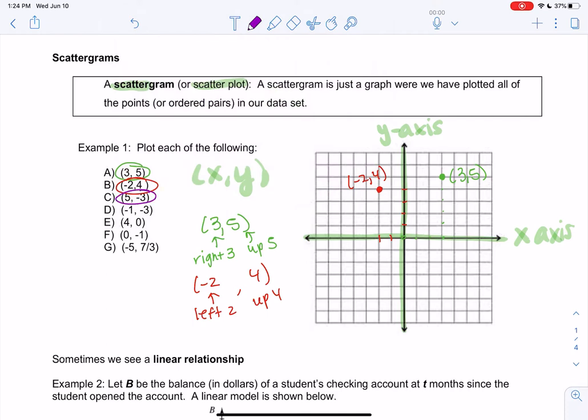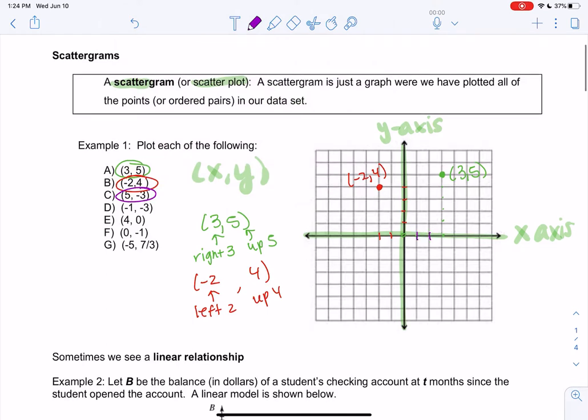5, negative 3, so 5 says go over 5, 1, 2, 3, 4, 5. And then since the 3 is negative, we're actually going to go down instead. So down 3, 5, negative 3. You don't have to label the points, I'm just labeling them for this example.